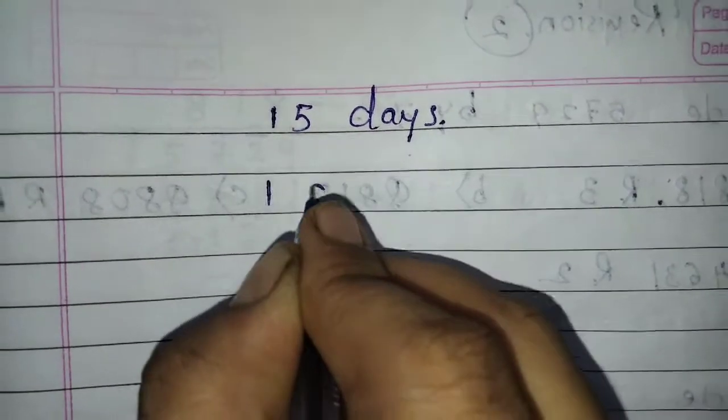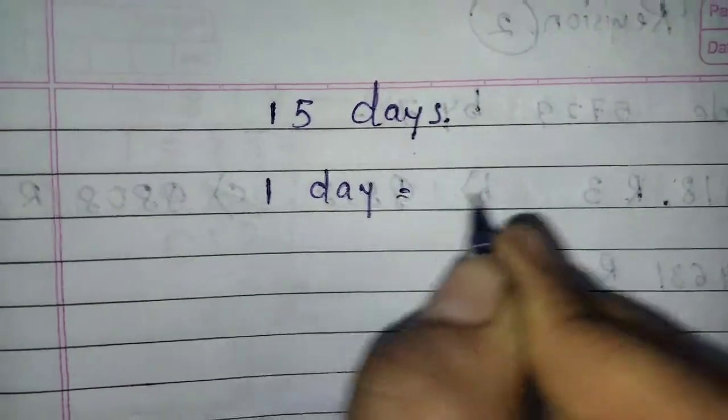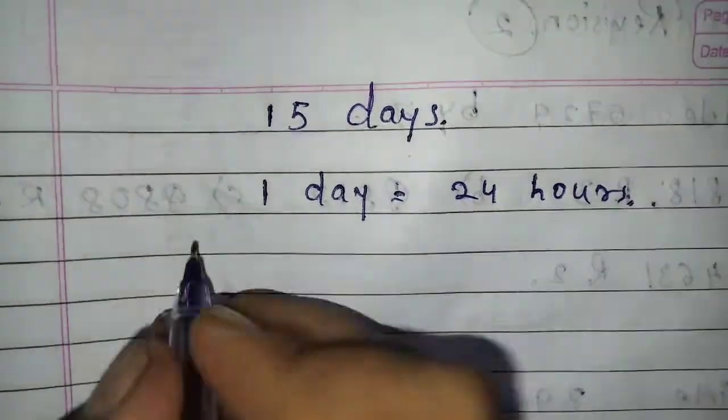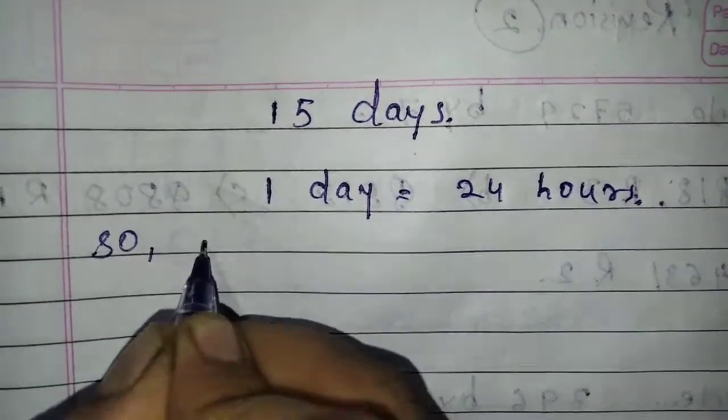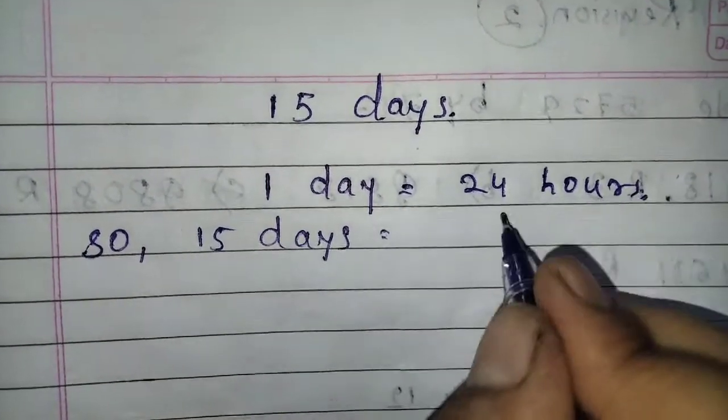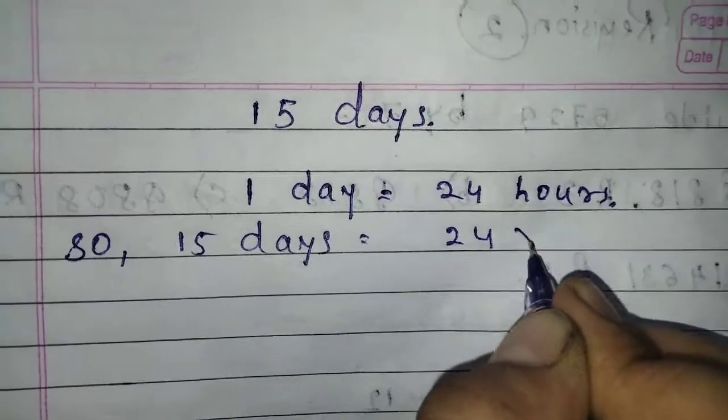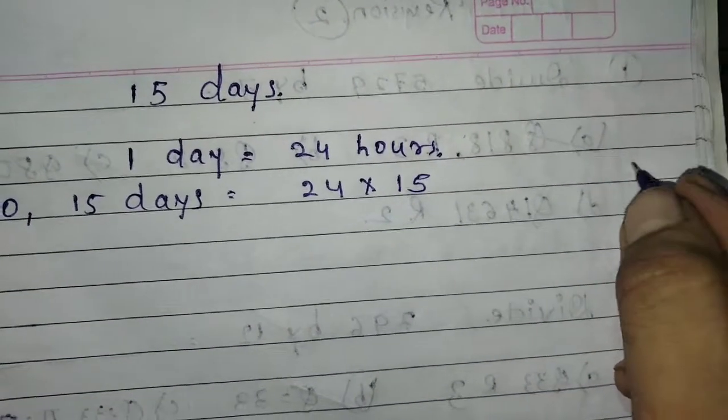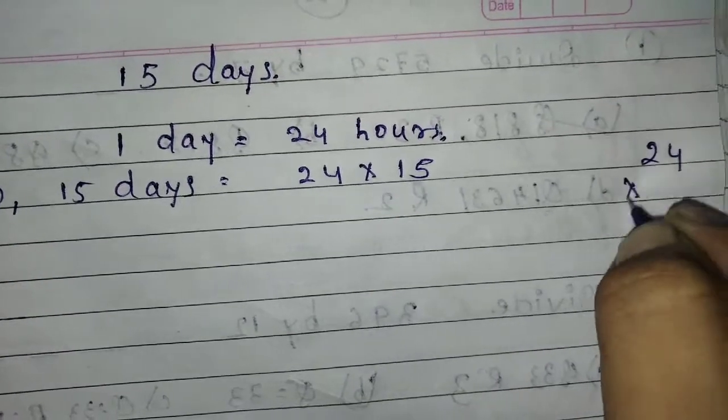One day is equal to 24 hours. So 15 days is equal to 24 times 15. You can do the calculation here. 24 times 15.